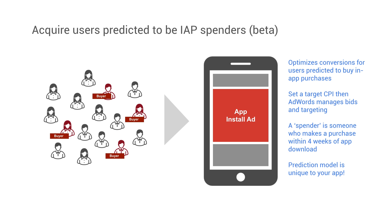And to find high-value users, use Paid Users Targeting. It enables you to show ads to app users who have previously made purchases. For Android, you could also show ads to only those users who have made an in-app purchase within a certain category.